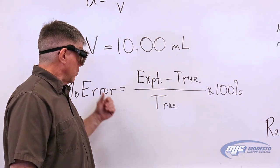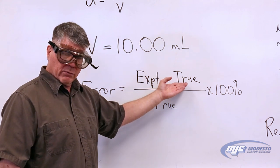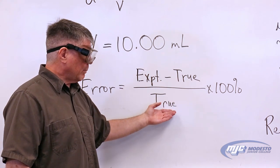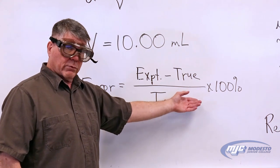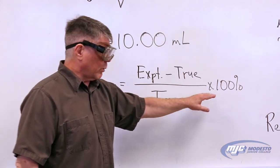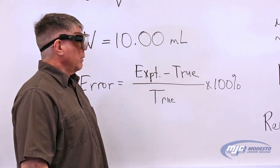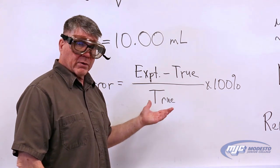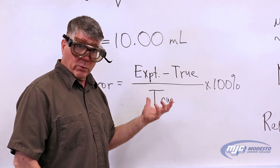The percent error is just your experimental value minus the true value, which you look up, divided by the true value times 100. The 100 is exact. The smaller the percent error is, the more accurate you were.